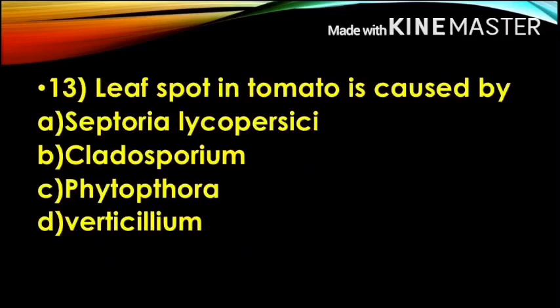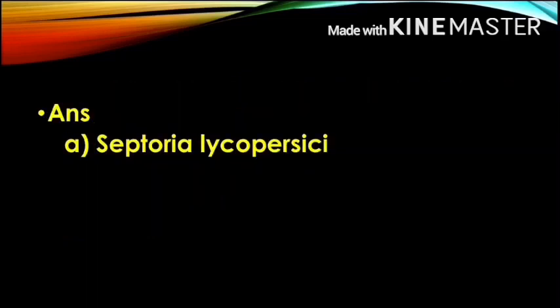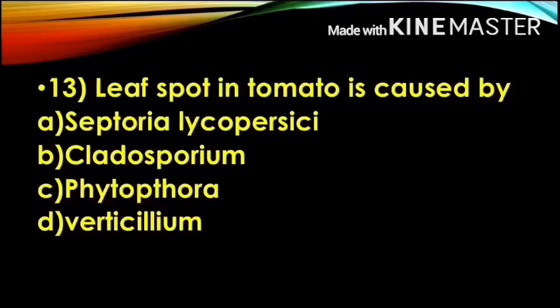Next question: Leaf spot in tomato is caused by — Option A, Septoria Lycopersicum; Option B, Cladosporium; Option C, Phytophthora; Option D, Verticillium. The correct answer is Option A, Septoria Lycopersicum. Leaf spot in tomato is caused by Septoria Lycopersicum.